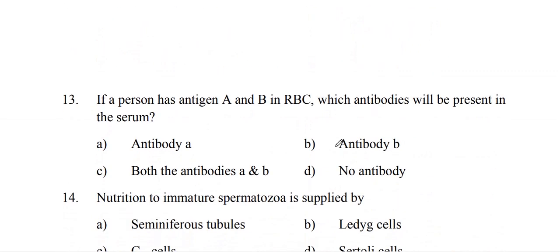If a person has antigen A and B in RBC, this person has both antigen A and B, meaning they have the AB blood group. Which antibodies will be present in the serum? In the AB blood group, there is no antibody.